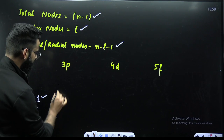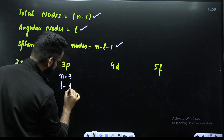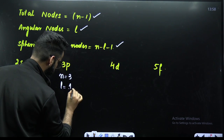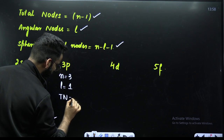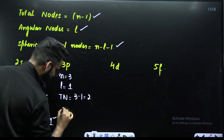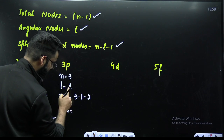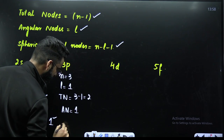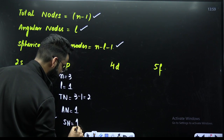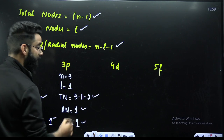Next, for 3P: N = 3, and for the P subshell L = 1. Total number of nodes = N − 1 = 3 − 1 = 2. Angular nodes = L = 1. Spherical nodes = N − L − 1 = 3 − 1 − 1 = 1. So total nodes = 2, angular nodes = 1, spherical nodes = 1.